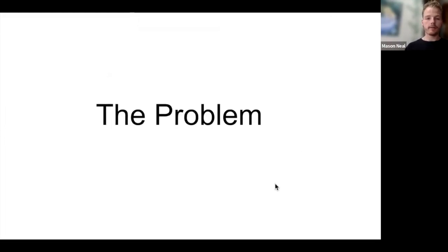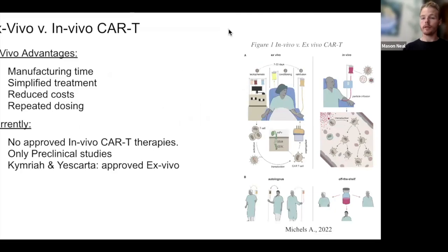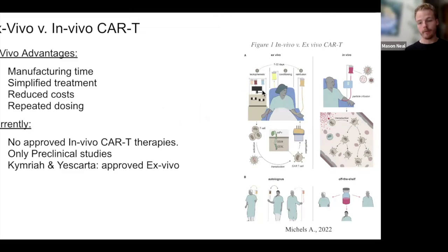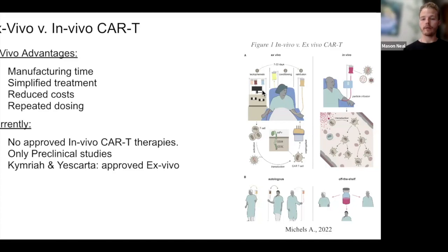So first, let's address the problem overall. Traditionally, ex vivo CAR-T methods are used for CAR-T therapy, as illustrated by the image here on the right, where you go through leukapheresis, where T lymphocytes or T cells are harvested. They're genetically modified with a CAR gene and implemented back into the body via re-infusion. There's often a conditioning step in between that allows for the patient's body to be prepared for the re-infusion or harvesting step of these cells.